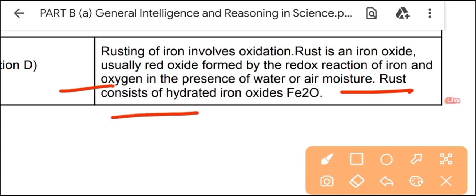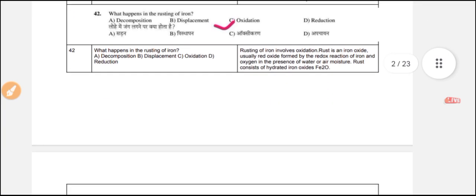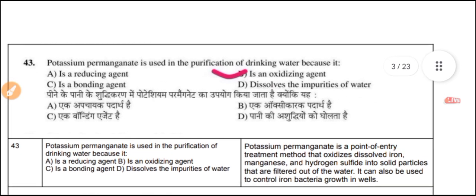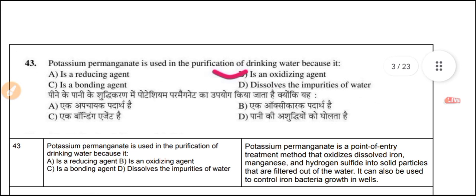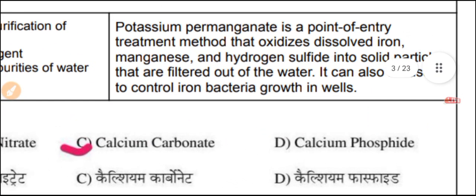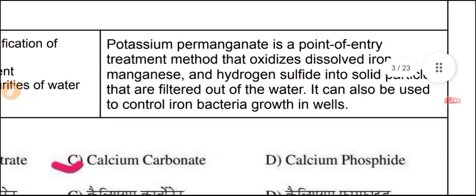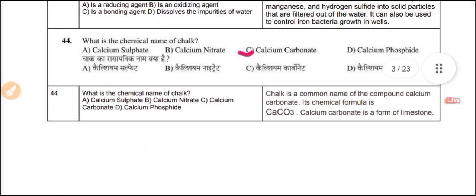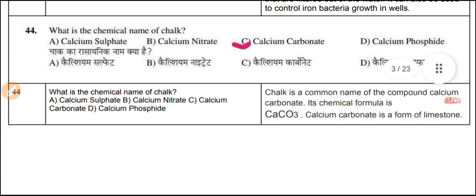Question 43: Potassium permanganate is used in the purification of drinking water because it is an oxidizing agent. Potassium permanganate is a point-of-entry treatment method that oxidizes dissolved iron, manganese, and hydrogen sulfide into solid particles that are filtered out of the water. It can also be used to control iron bacteria growth in wells.